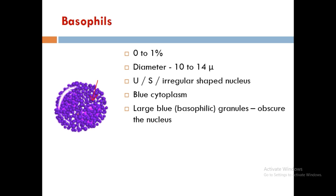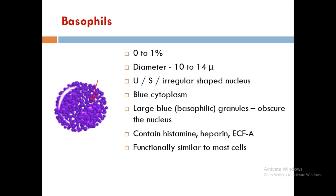Basophil granules are highest in number and contain histamine, heparin, and ECFA (eosinophilic chemo-attractant factor A). ECF is a chemical not specifically present only in eosinophils — it is also present in basophils. Basophils are functionally similar to mast cells.